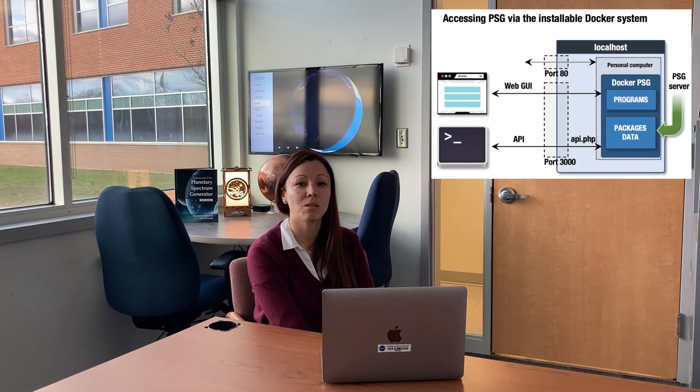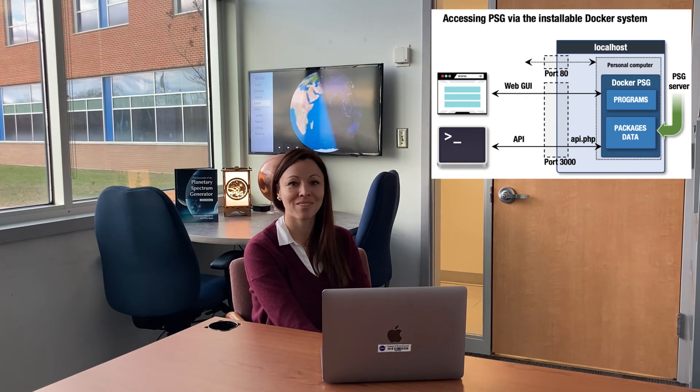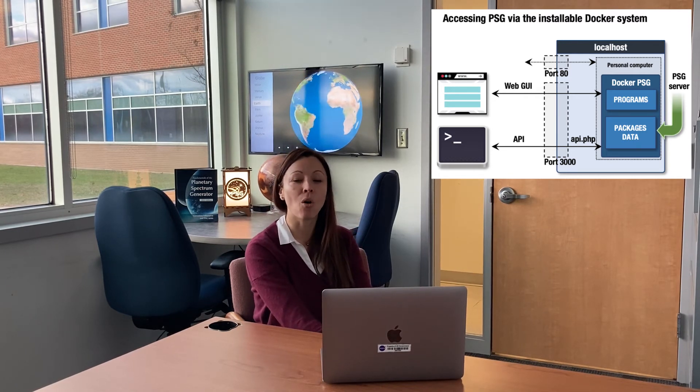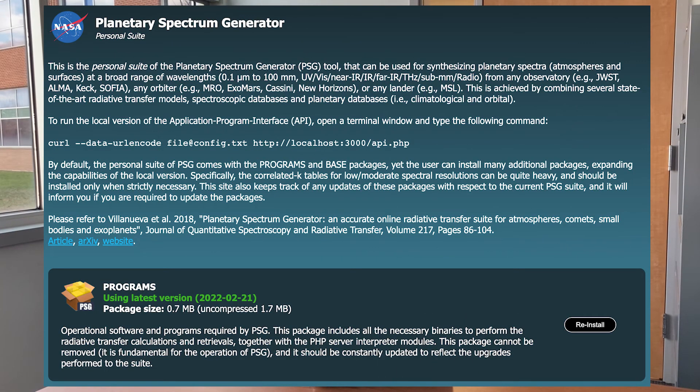The PSG Docker can run on any personal computer: Mac, Linux, or Windows. The Docker container wraps up the software and all its dependencies into a standardized package that includes everything it needs to run, and this guarantees that PSG always runs the same. PSG personal suite is organized in packages. By default it comes with the programs and base packages, yet you can install many additional packages, expanding the capabilities of your local version. Importantly, the local PSG site also keeps track of any updates of these packages relative to the current PSG online suite, and it will inform you if you are required to update any of them.